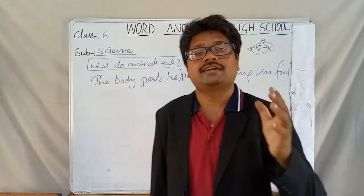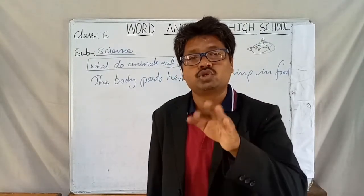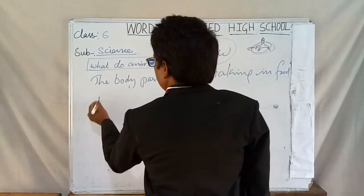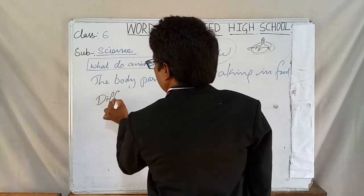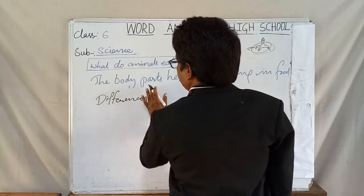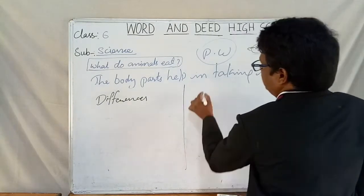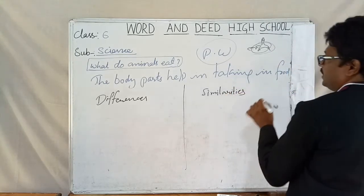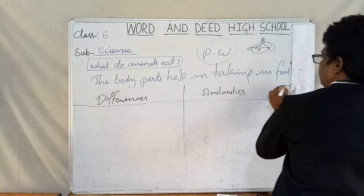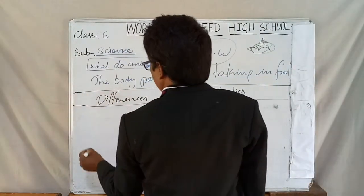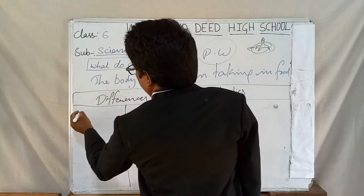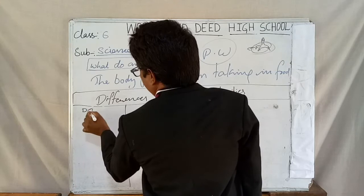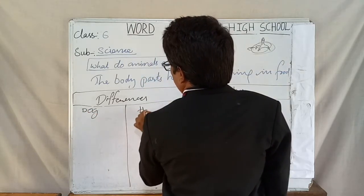Now let's find the differences and similarities between two living things. We have to find differences between dog and hen.